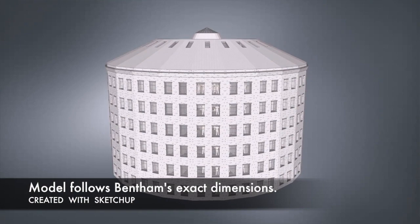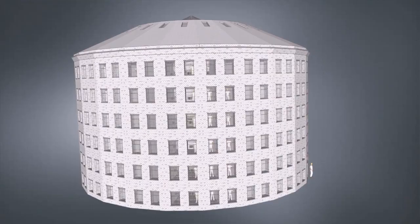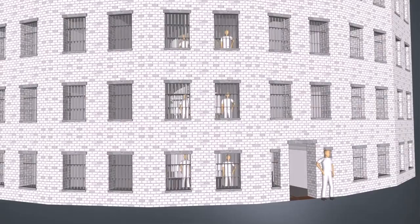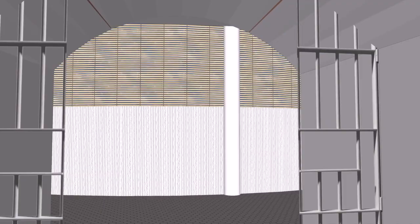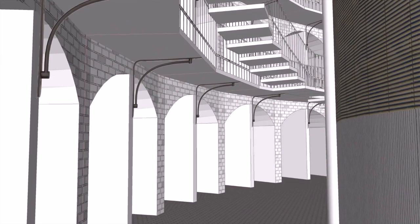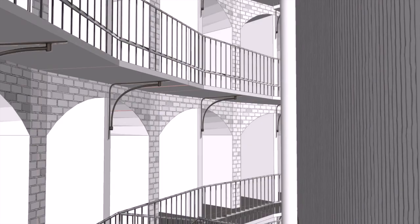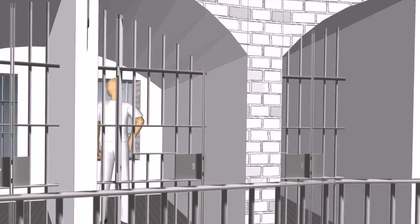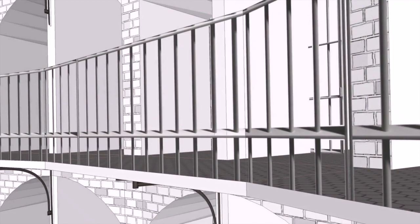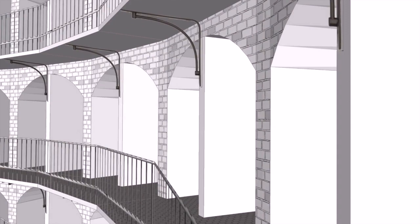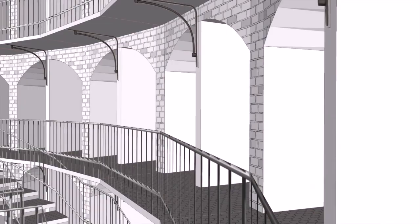Now we're going to enter the Panopticon and I'll give you a brief point of view of what it looks like inside the space based on this computer model. The space on this side is the guard tower — blinds prevent you from seeing in, but guards can see out. You can see the individual cells and above them the tiers of walkways that link the different cells together. Then as you rise up through the space we'll get a view into the individual prisoner's cell. This gives an idea of what the architectural space looks like.